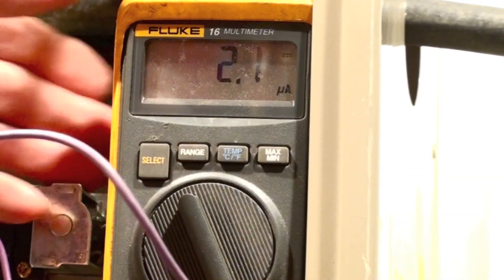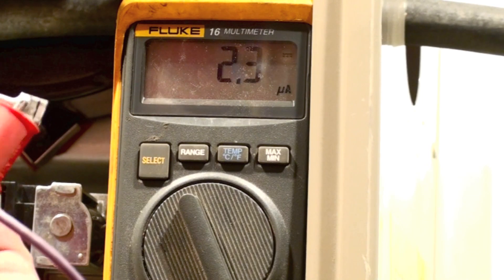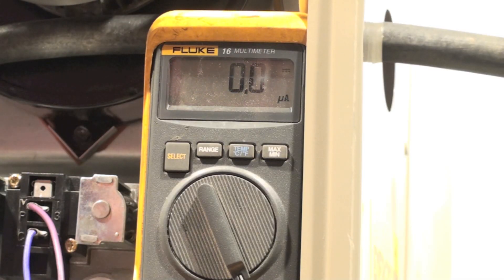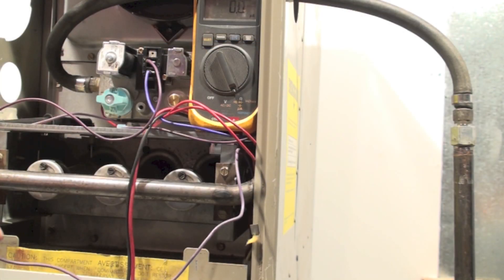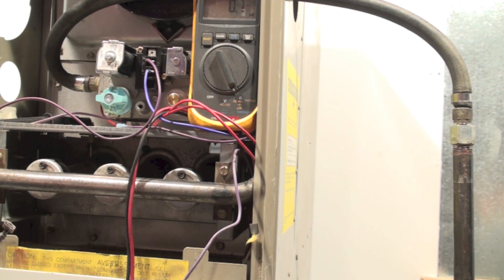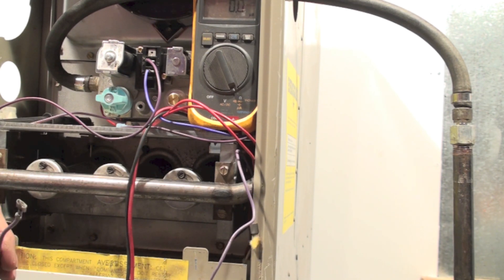Now the next thing I'm going to do is I'm going to go ahead and disconnect here. Now the flame goes out as it should. Now what I'm doing right now is I'm testing the safeties in this furnace, because the flame rod, when I took the wire off, could no longer read the flame sense, so the furnace sensed that and it shut down.